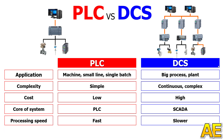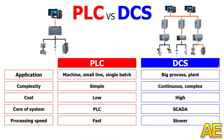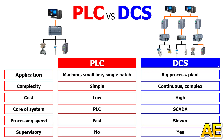The next difference is processing speed. The PLC uses direct connection and fewer devices, so the processing speed is fast. The DCS is slower, with thousands of equipment and a lot of data transfer through many stations such as PLC, server, SCADA, devices, and IO. The next difference is about the supervisory layer — with PLC we just need a panel for control, but with DCS we must have one to manage the big and complex process.